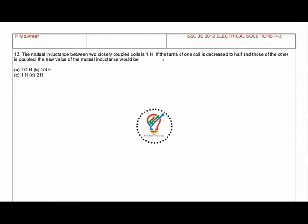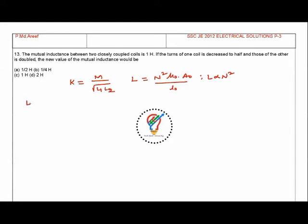The next question: the mutual inductance between two closely coupled coils is 1 Henry. If the number of turns of one coil is decreased to one half and the other is doubled, what is the new mutual inductance? The formula is K = M divided by square root of L1 times L2, and inductance is proportional to N squared. So L1 becomes N over 2 squared and L2 becomes 2N squared.